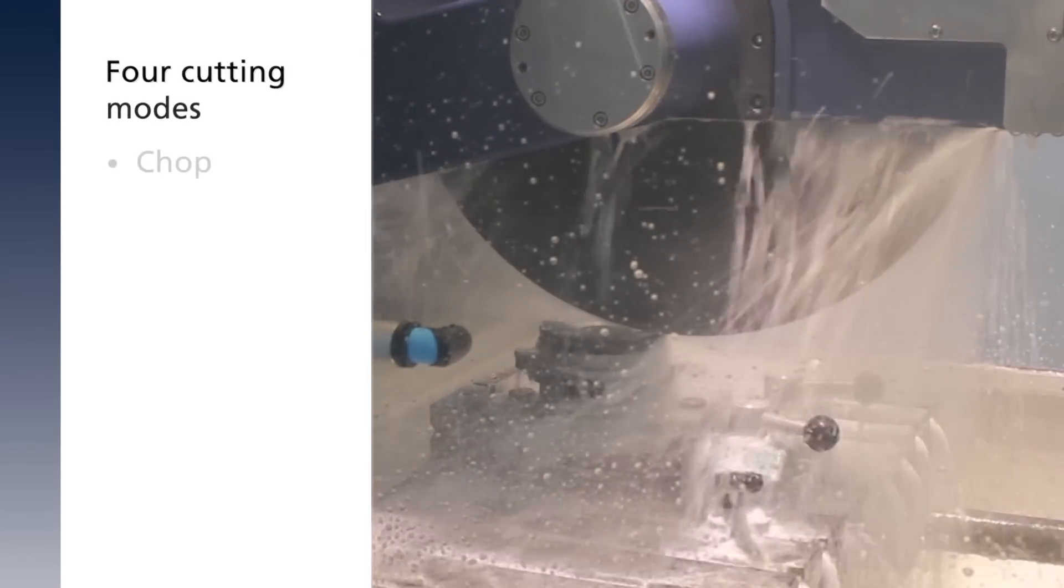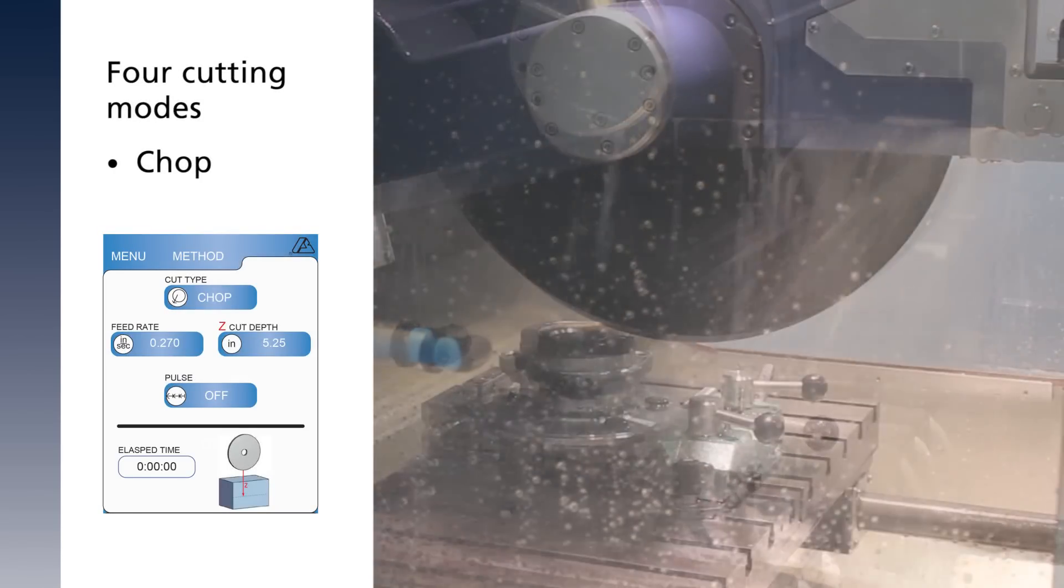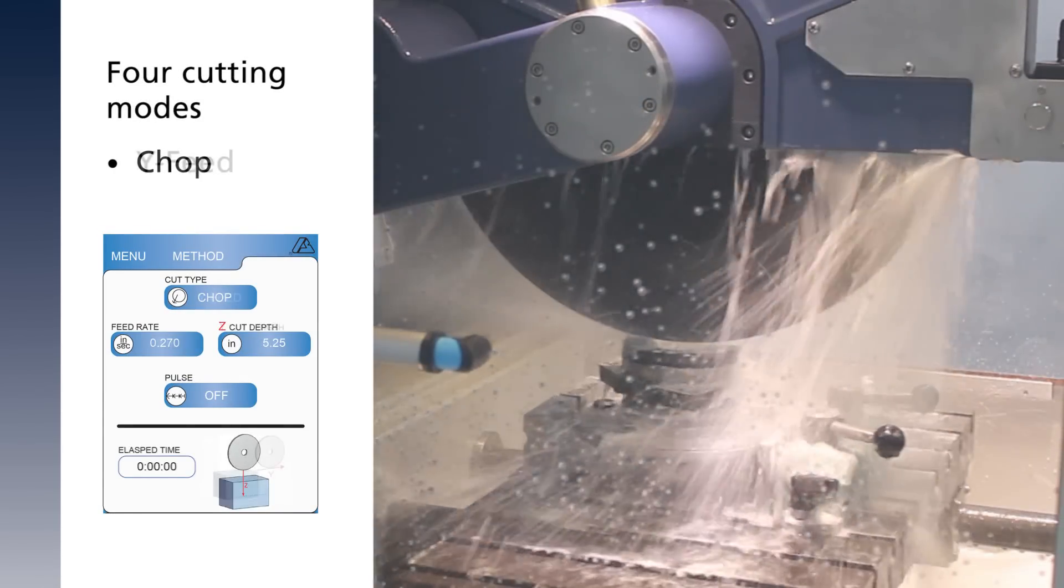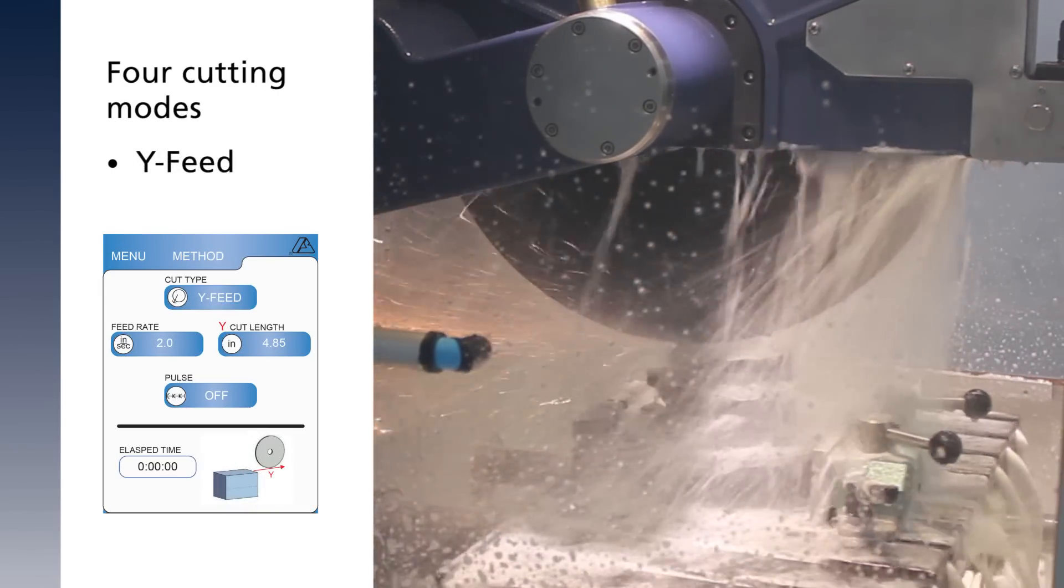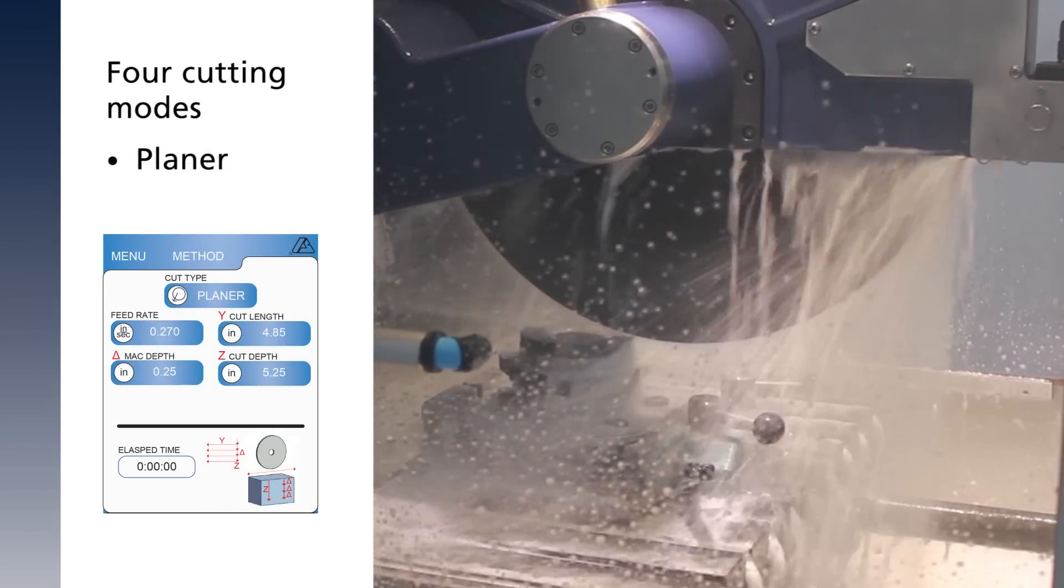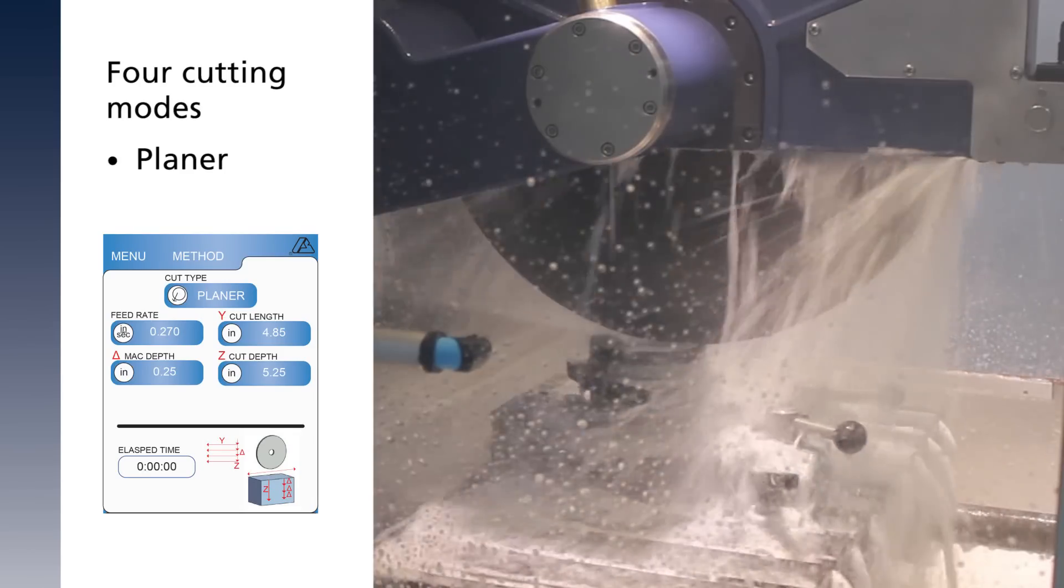With Y table motion as well as X and Z wheel motion, larger samples can be easily sectioned or even serial sectioned using one of four cut types.